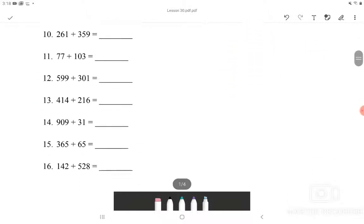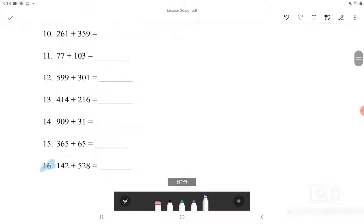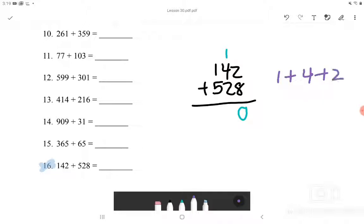And lastly we will be going over number 16, which is the last question in this section. Which is 142 plus 528. 2 plus 8 is equal to 10, so we are going to put 1 up there and 0 down here. And then we will have to do 1 plus 4 plus 2. And when we add all those 3 numbers we get 7. And 1 plus 5 is equal to 6. So the answer for number 16 will be 670.